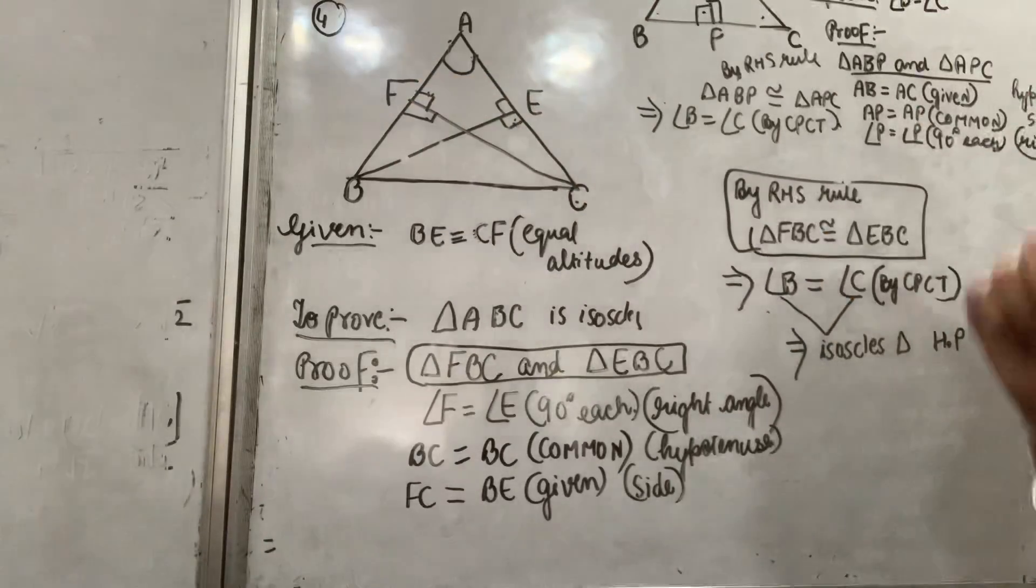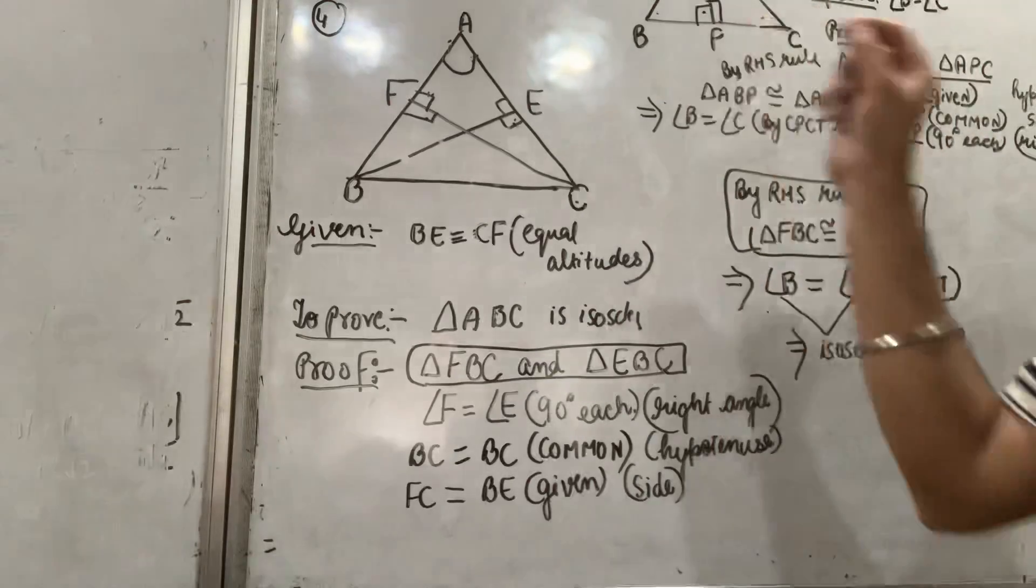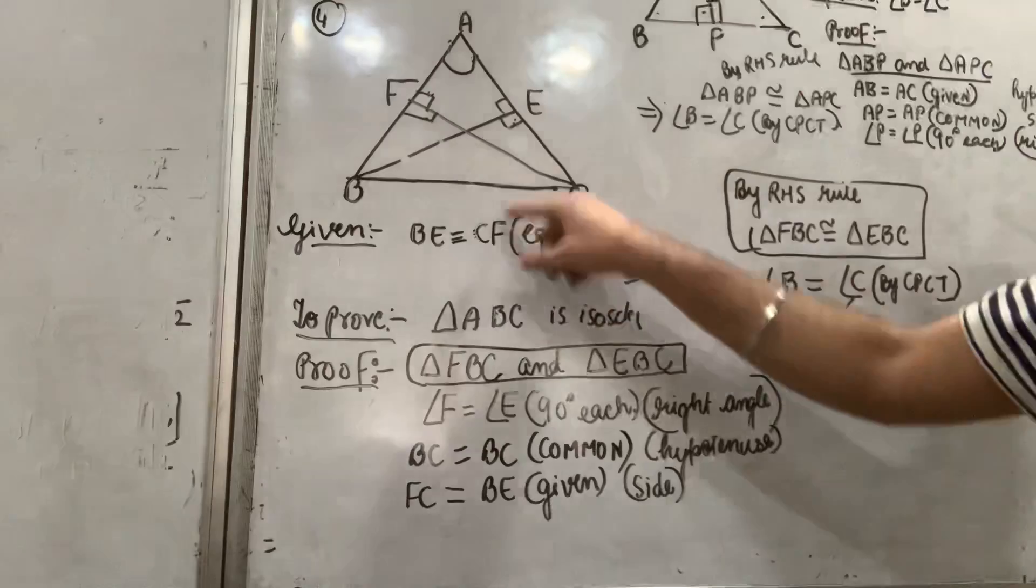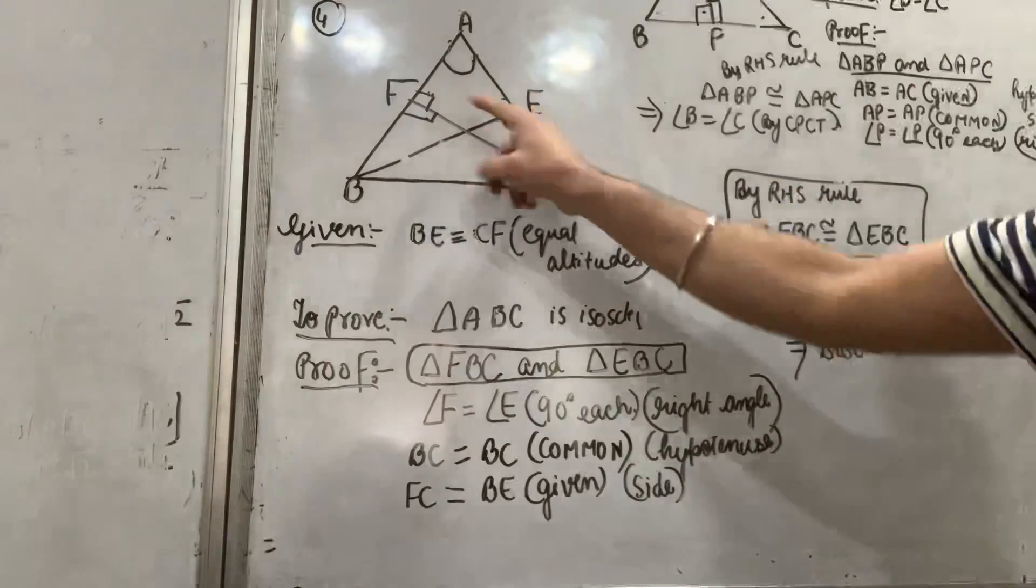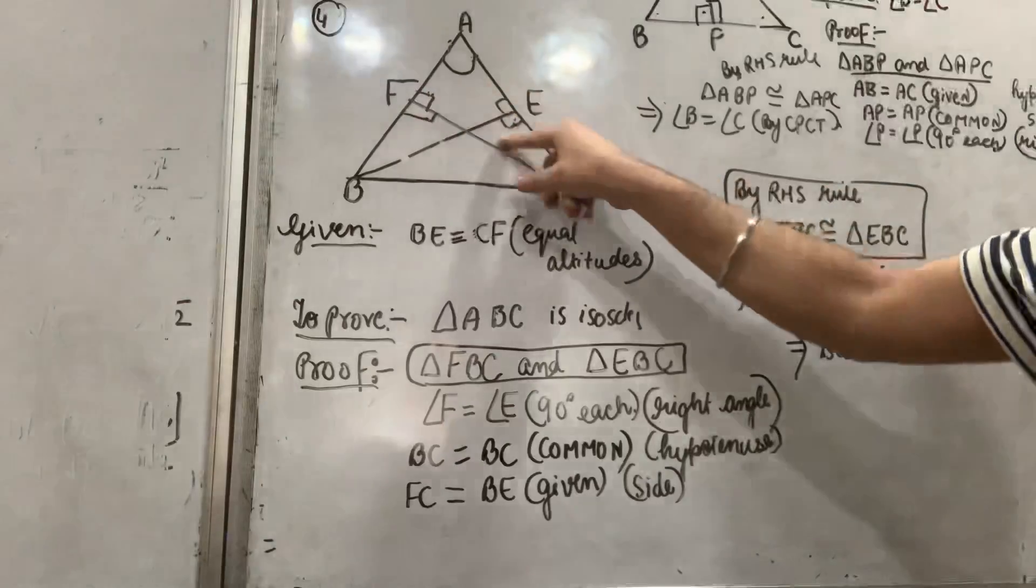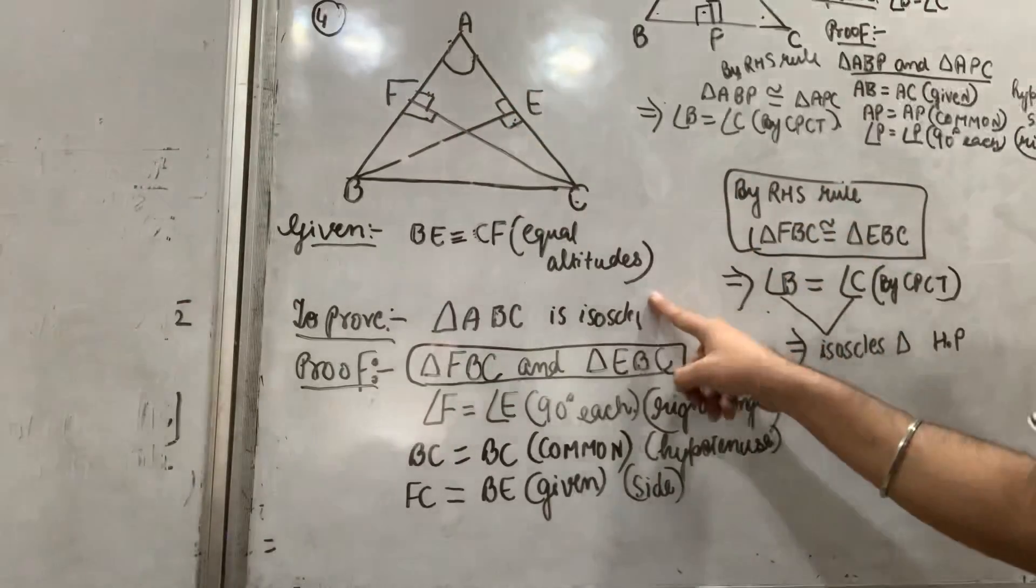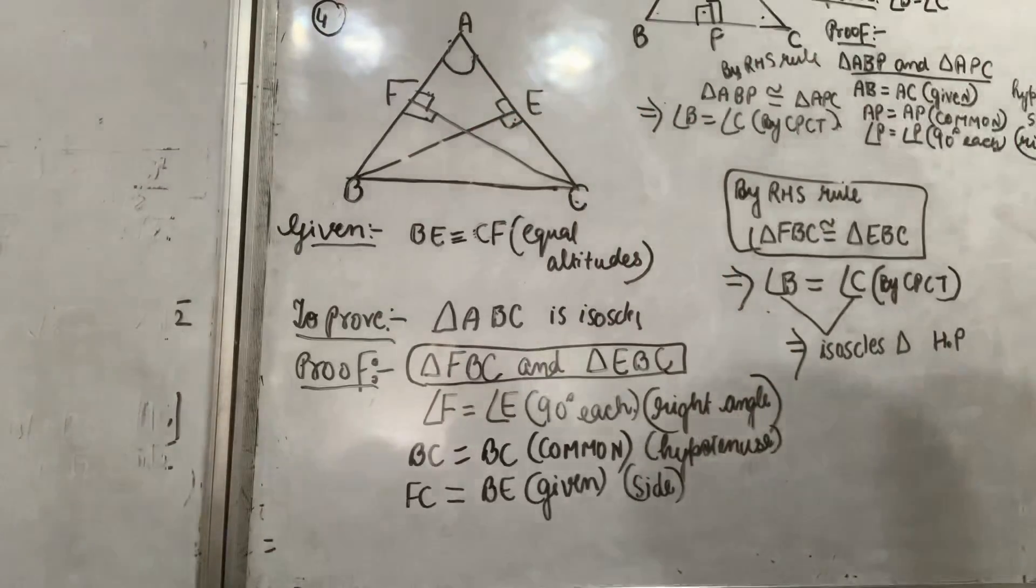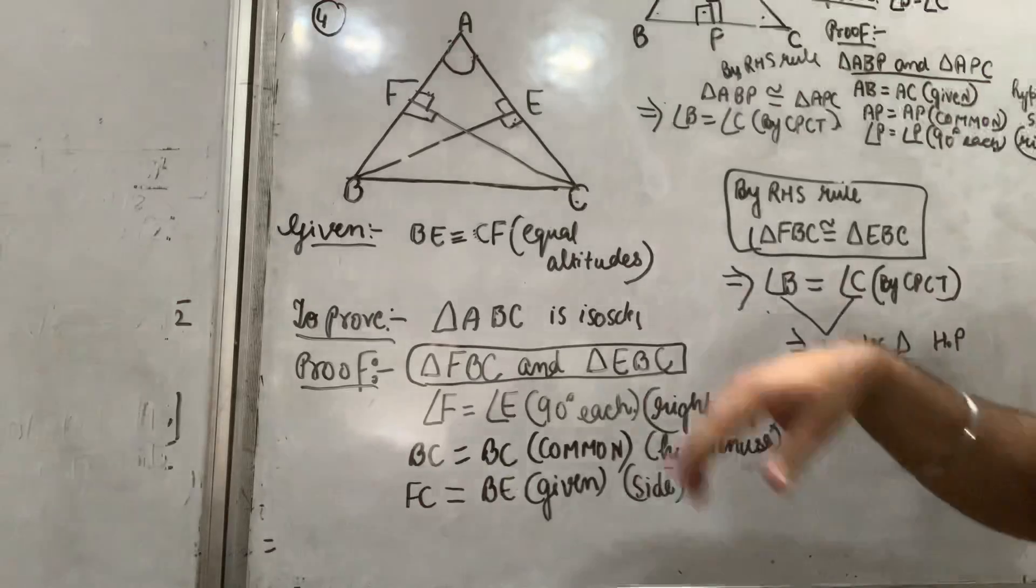Using RHS, prove that triangle ABC is isosceles. What is given? BE is equal to CF, equal altitudes are given, and angles are 90 degrees. To prove: triangle ABC is isosceles using RHS rule.